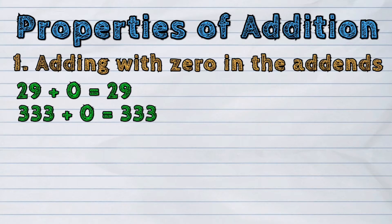333 plus zero is 333. 9,757 plus zero is 9,757.